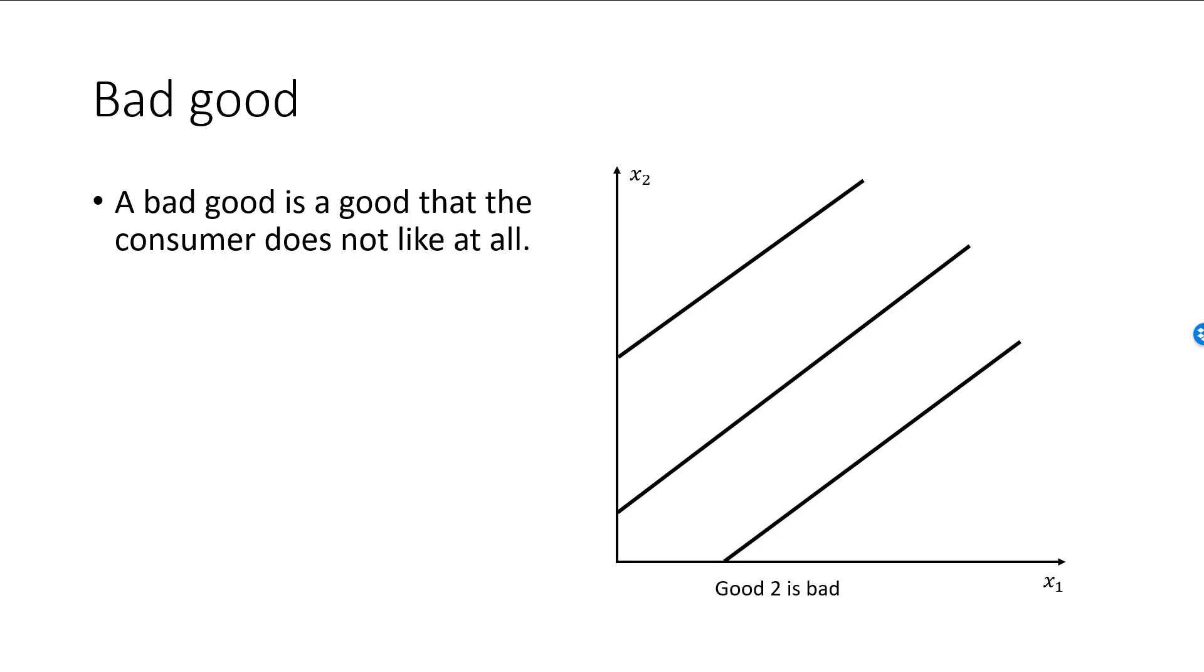In the graph, good 2 is bad, and the best bundles are down to the right. The indifference curves need not be straight lines though, as I have drawn them here.